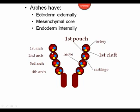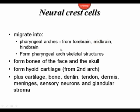The outside of the arch is covered by ectoderm. The inside of the arch and the pharyngeal pouches are covered by endoderm. Inside, there is a mesenchymal core. The mesenchymal cells in the pharyngeal arches come from, in part, neural crest cells. These neural crest cells migrate into the pharyngeal arches from the developing brain regions, and they're going to help form the bones of the face and the skull, some of the cartilages, and other components found in the head and neck.